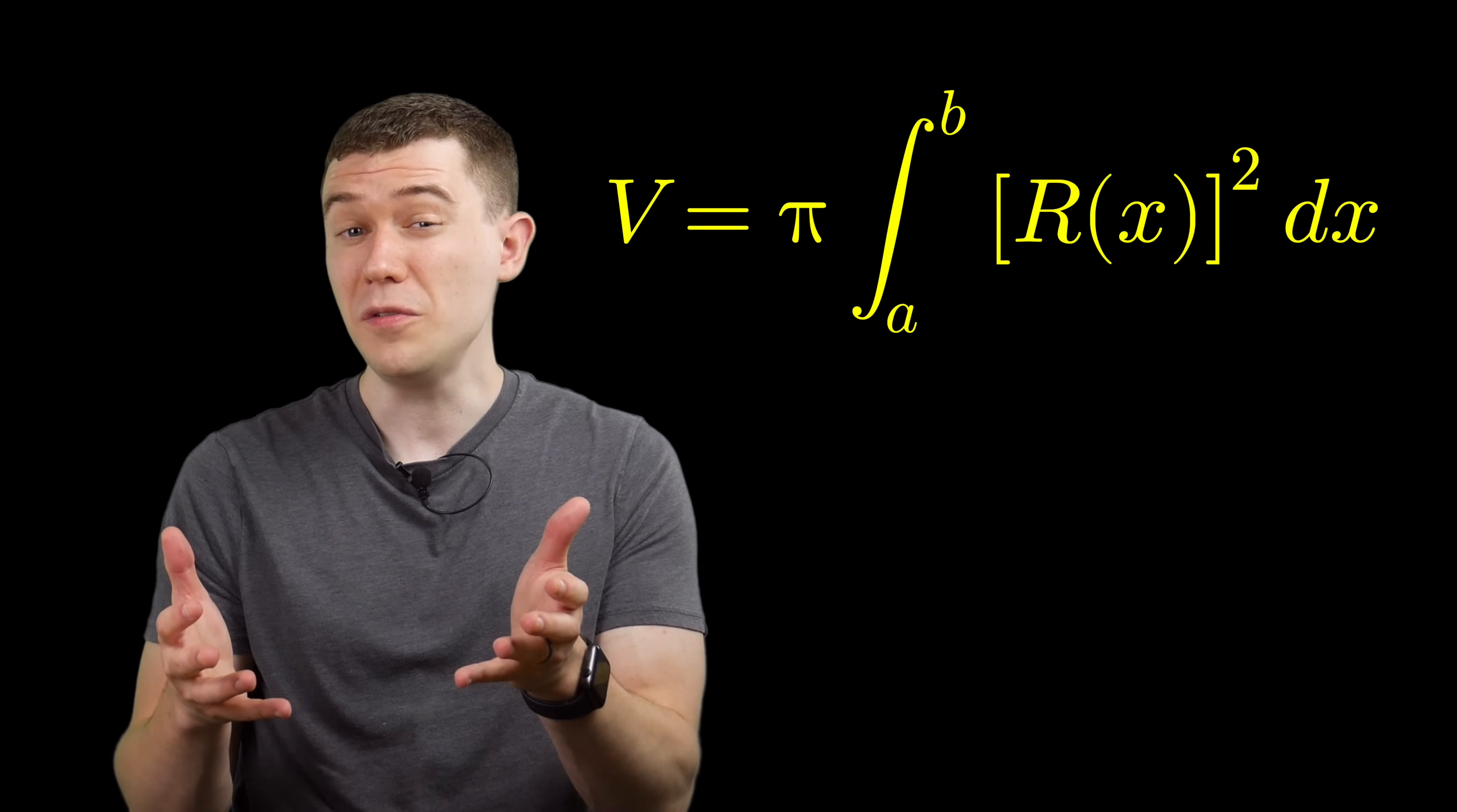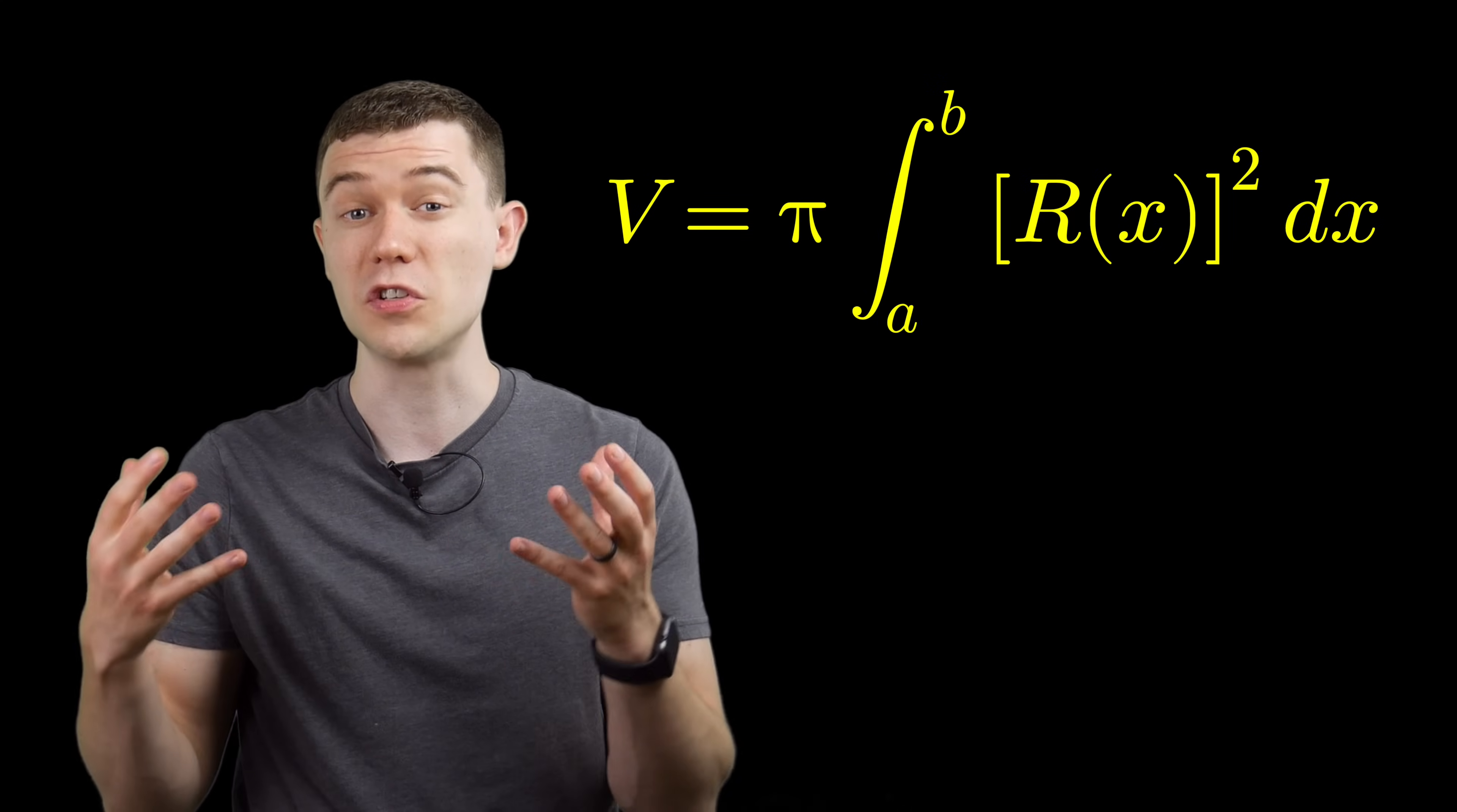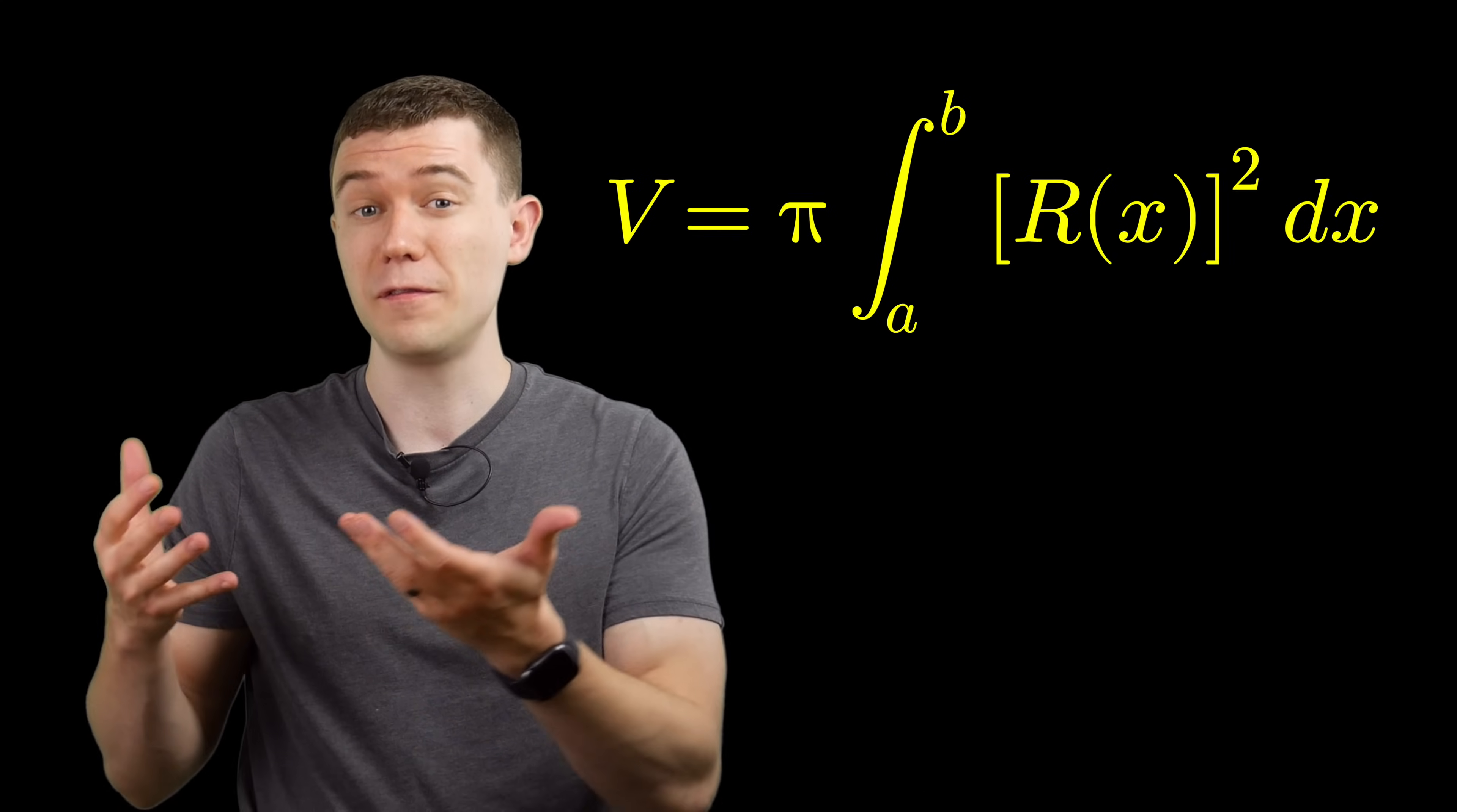Suppose you wanted to know the volume of this thing. We can look back at calc one and just do a volume of revolution integral given by this equation. When we do these integrals, we're essentially continuously adding up a bunch of circles' areas. That's where the pi r squared comes in. So what's the radius here? It's simply the function.